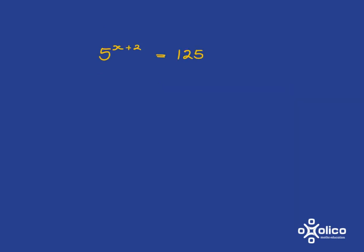And even if we just slightly alter what we've got, the main idea remains the same. If we've got something like this, all we need to make sure is that we've got 5 in the base on both sides. So, in this case, we are going to turn 125 into 5 to the power of 3, because that's what 125 is equal to.